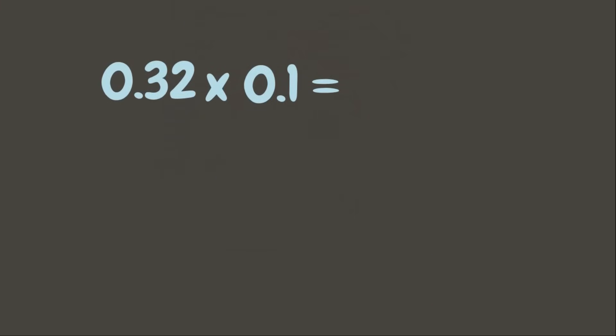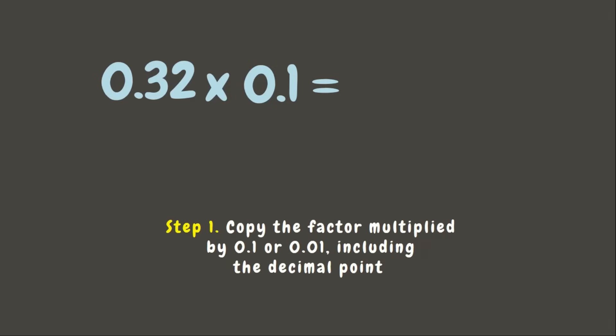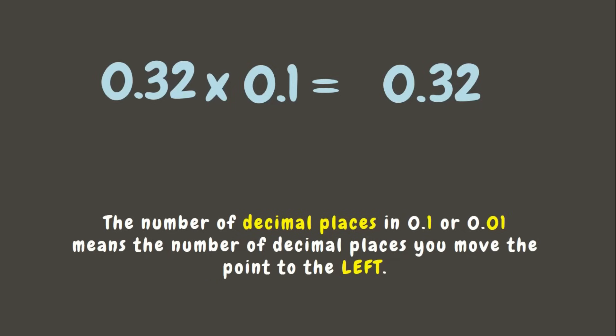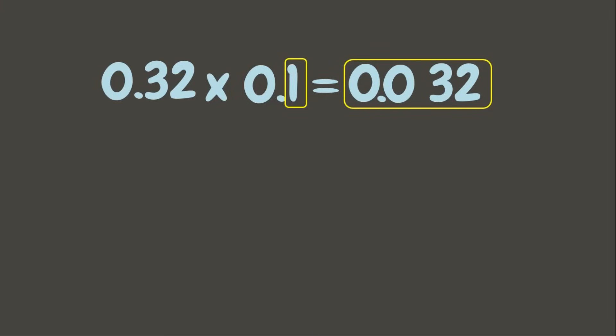Let's try another one: 32 hundredths times 1 tenth. When multiplying decimals by 1 tenth or 1 hundredth, the first thing we need to do is copy the factor being multiplied by 1 tenth or 1 hundredth, including the decimal point. Then, the number of decimal places in 1 tenth or 1 hundredth tells us the number of decimal places to move the point to the left. Since 1 tenth has one decimal place, we move the decimal point one place to the left. Let's add zero. Now this is our answer.